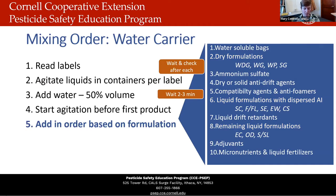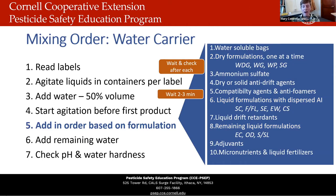After adding the products in this order, add the remaining water and continue agitation until the tank mix appears uniform. Then measure the pH and water hardness to determine the proper levels of water conditioners or ammonium sulfate that you might need. While it's always a good rule of thumb to check pH after mixing, pH adjusters are not always added at the end — the label will tell you when to add them.